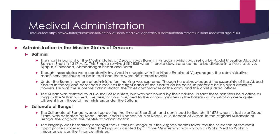The Sultanate of Bengal was set up during the time of Sher Shah and continued to flourish until 1576, when the last ruler Dawood Karrani was defeated by Khan Jahan, the Khan-e-Khanan, a lieutenant of Akbar. In the Afghan Sultanate of Bengal, the king was the centre of administration. Kingship was hereditary among the sultans of Bengal, though Afghan nobles favoured selection of the most appropriate successor. The king was assisted by a prime minister also known as Vakil, and next in importance was the finance minister.